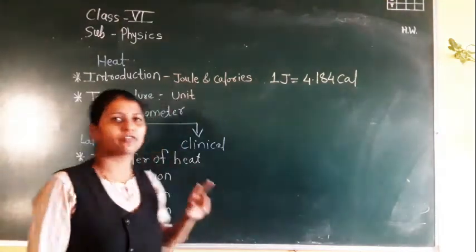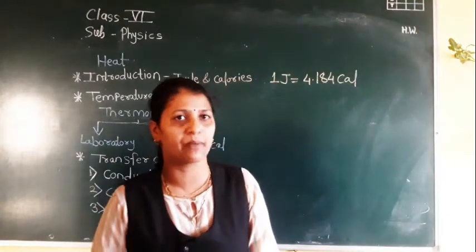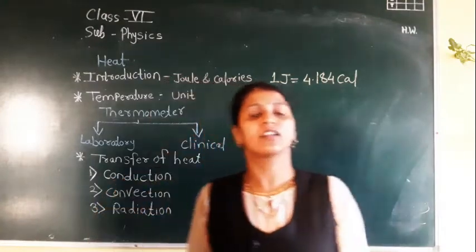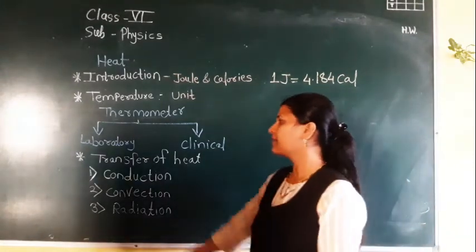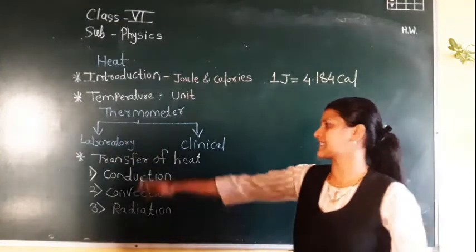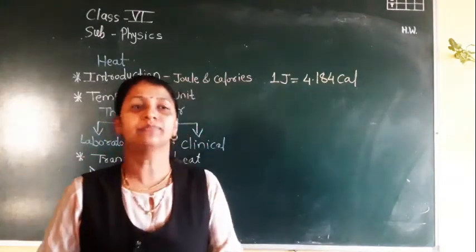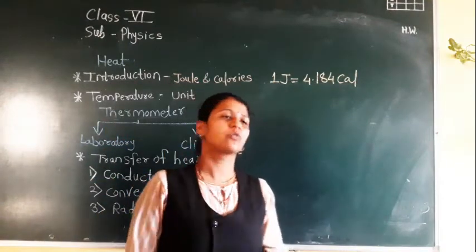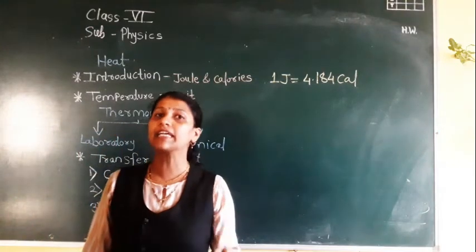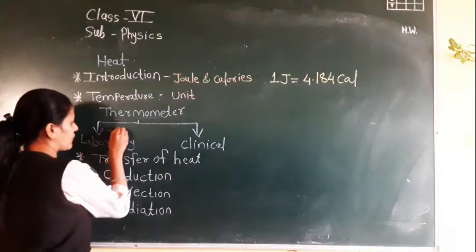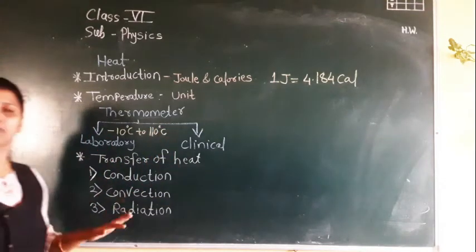There are mainly two types of thermometer: laboratory thermometer, clinical thermometer, and one more type is the maximum-minimum thermometer, which is used to record the weather conditions. We are mostly going to study the two main types. The laboratory thermometer is used to measure the temperature of chemicals, and its range is from minus 10 degree Celsius to 110 degree Celsius.